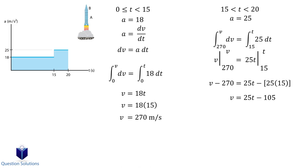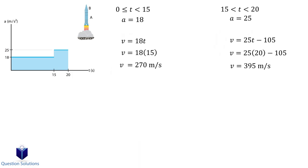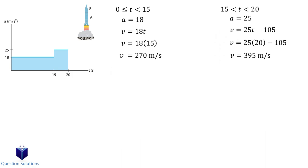Solving this integral gives us our velocity equation. To make drawing the graph easier, let's figure out the velocity of the missile at 20 seconds. At 20 seconds, the missile is traveling with a velocity of 395 meters per second. The graph looks like this.